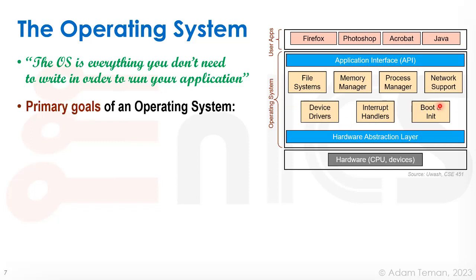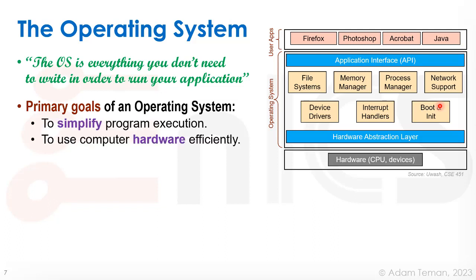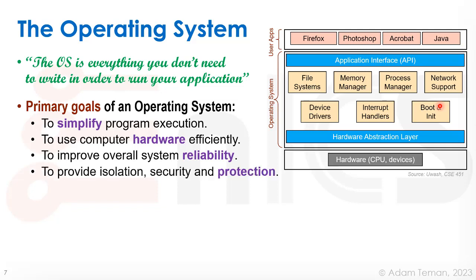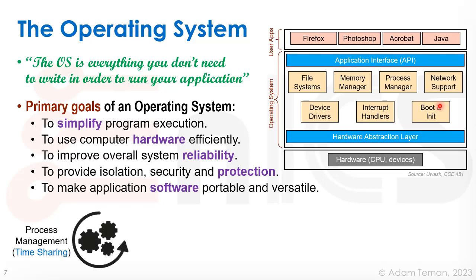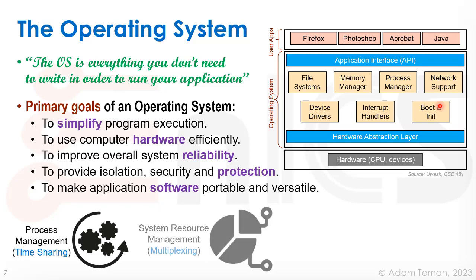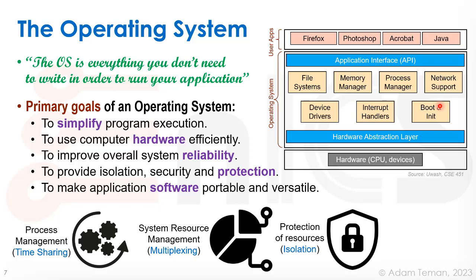What are the primary goals of an operating system? First, to simplify program execution, to use the computer hardware efficiently, to improve overall system reliability, to provide isolation, security, and protection, and to make applications portable and versatile. We can also say it's for process management — time sharing — for system resource management — multiplexing — for protection of resources, isolation, and for interface — simplicity.